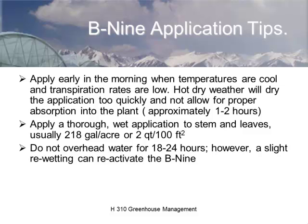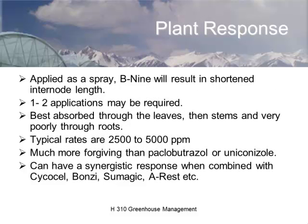Apply B9 early in the morning without much heat in the greenhouse, getting the foliage very wet. Don't apply overhead irrigation afterward — make sure the plant is well-watered before the application. B9 is absorbed through the leaves. For novice growers, B9 is safer because it's applied at 2,500 to 5,000 ppm and it's easy to push the plant out of any mistake. With triazole compounds, it's not so easy to recover from over-application.